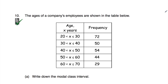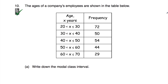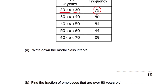Question number ten. The ages of a company's employees are shown in the table. There are 72 employees aged over 20 but ≤30, 50 aged over 30 but ≤40, and so on. Part A: write down the modal class interval. The highest frequency is 72, which corresponds to the age group greater than 20 but less than or equal to 30. That is the modal class interval.